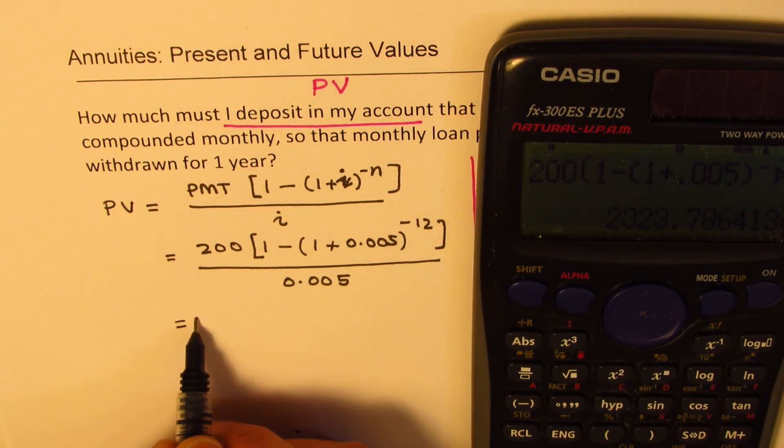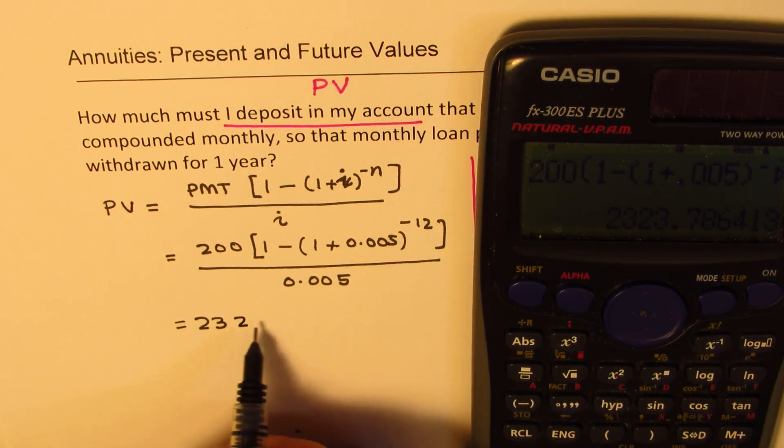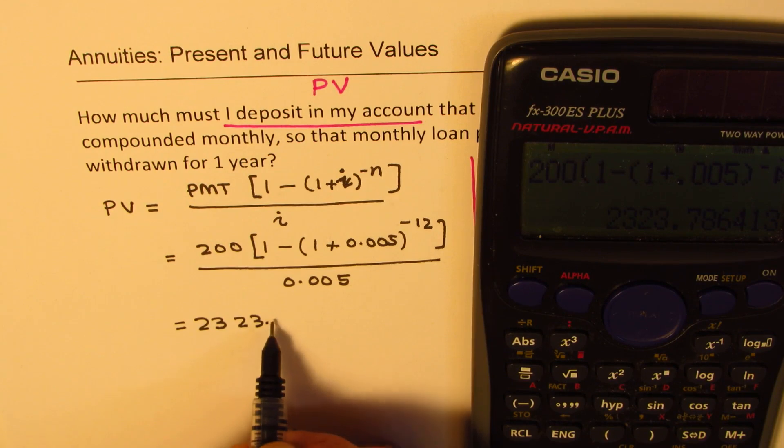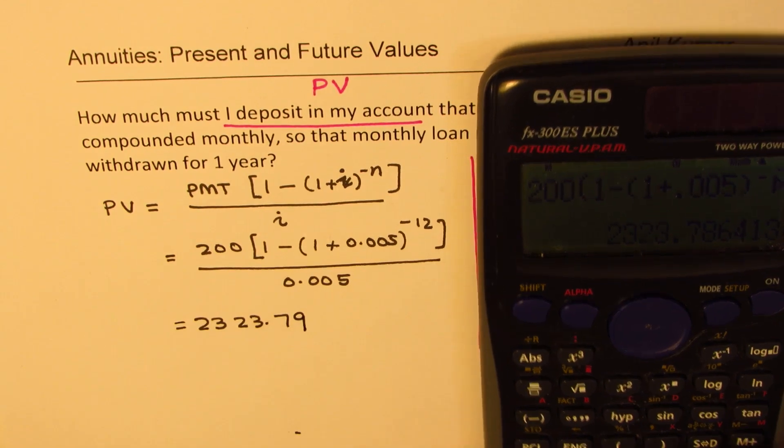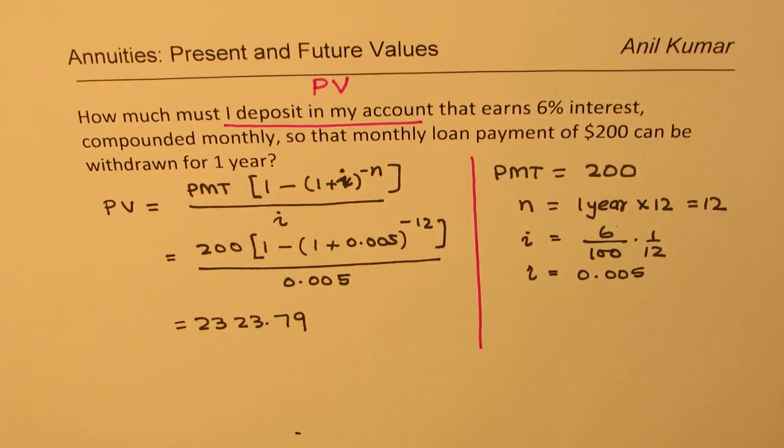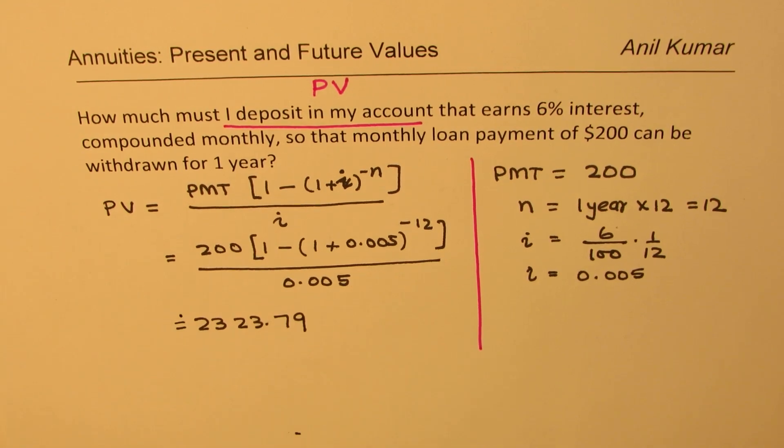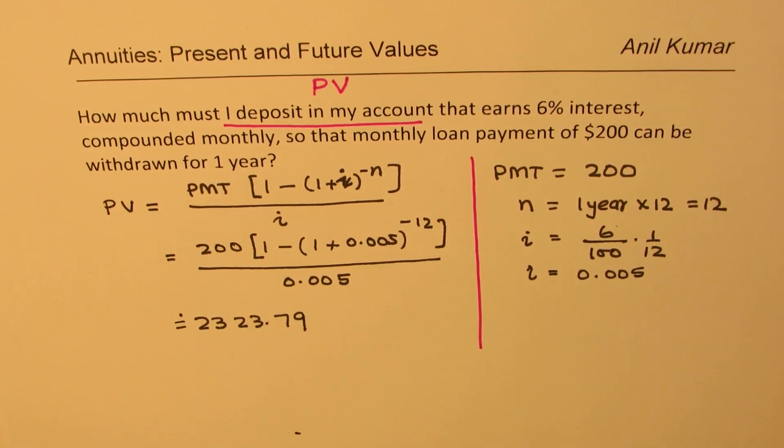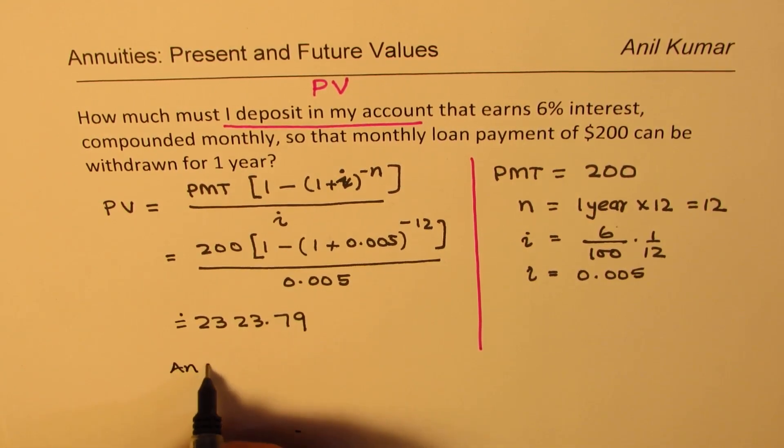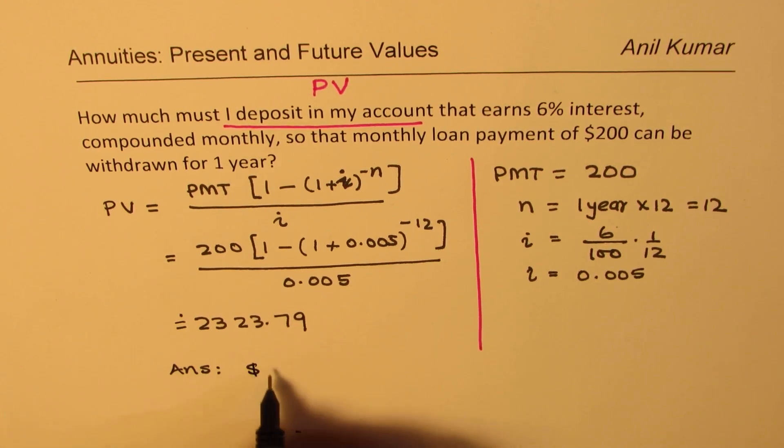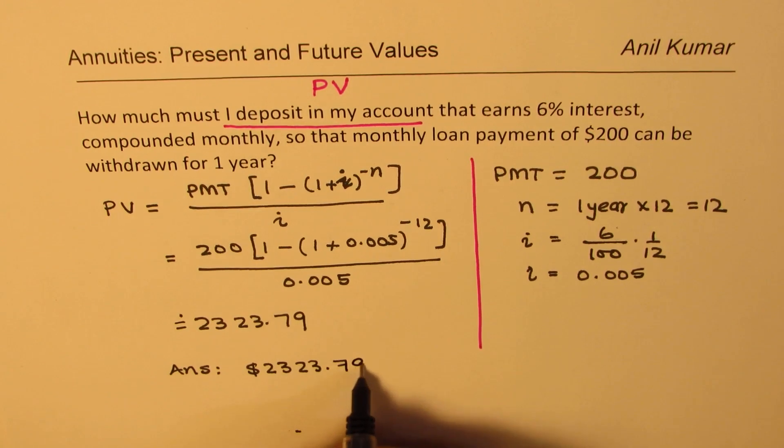So you get a value which is equal to 2323.786. I will round it to 79. So that is the amount rounded to nearest cent which I need to deposit. Our answer is that we need to deposit $2323.79 now.